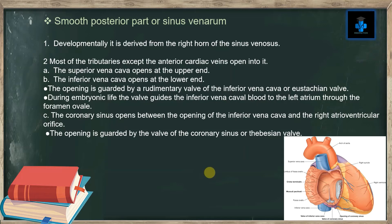The smooth posterior part, or sinus venarum: developmentally it is derived from the right horn of the sinus venosus. Most tributaries except the anterior cardiac veins open into it. The superior vena cava opens at the upper end and the inferior vena cava opens at the lower end, guarded by a rudimentary valve of the inferior vena cava, or Eustachian valve. During embryonic life, this valve guides inferior vena cava blood to the left atrium through the foramen ovale.